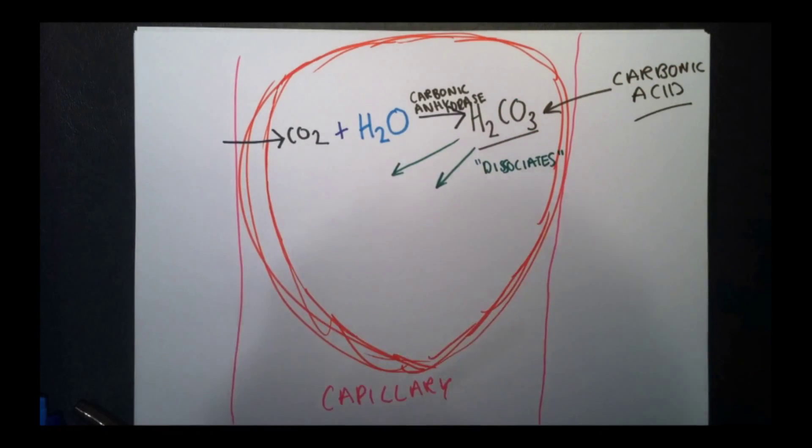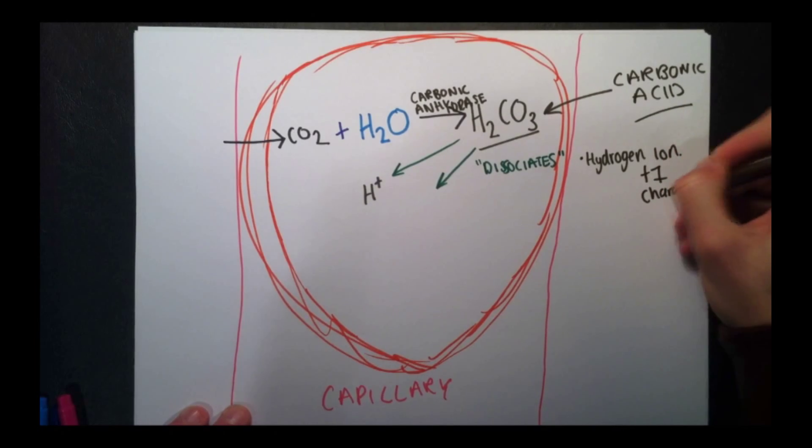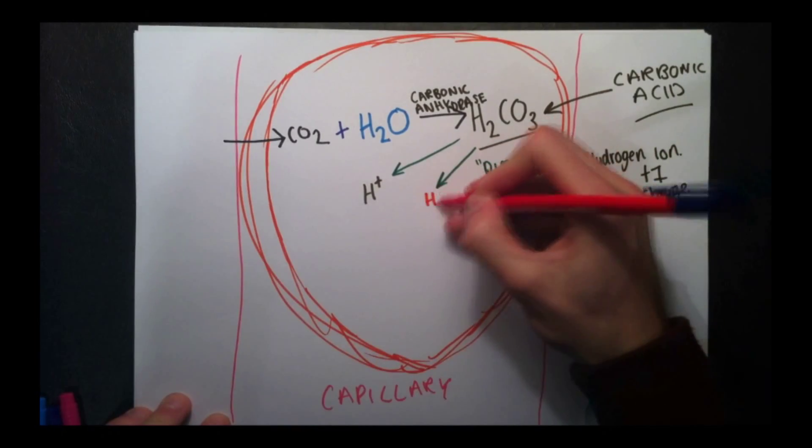Here, the carbonic acid dissociates, which means breaks up, separates, to give H+ hydrogen ions and HCO3- hydrogen carbonate ions.